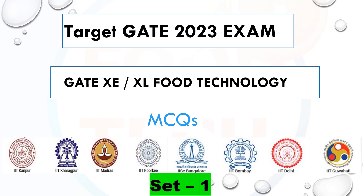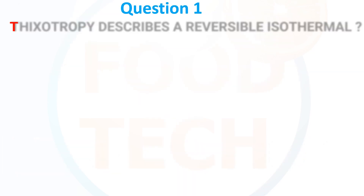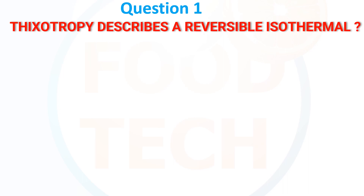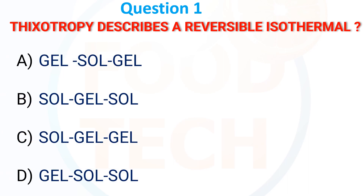Hello friends, welcome back to our channel. Today we have discussed important objectives for GATE 2023 exam. In Food Technology: Thixotropy describes a reversible isotherm. Which option is correct? A) Gel-Sol-Gel, B) Sol-Gel-Sol, C) Sol-Gel-Gel, D) Gel-Sol-Sol.